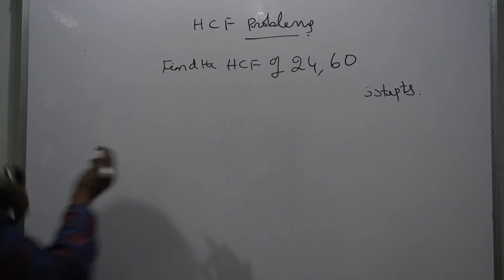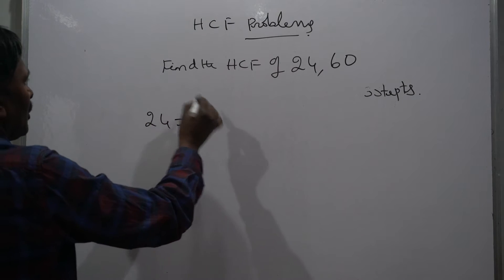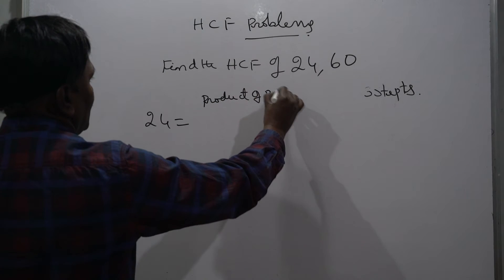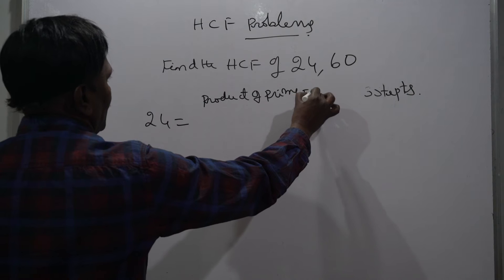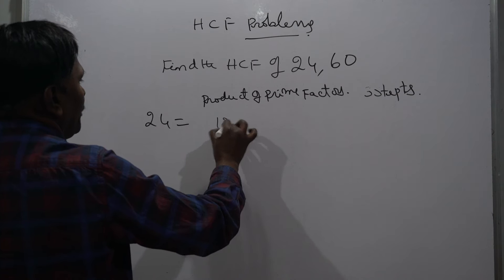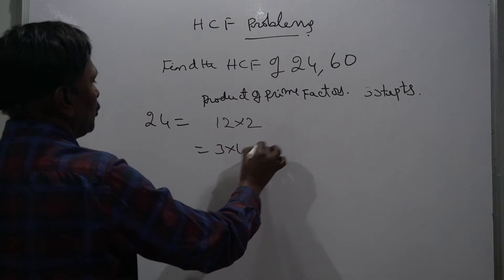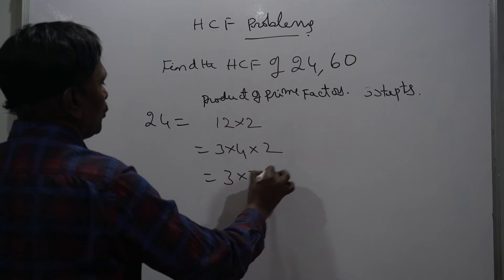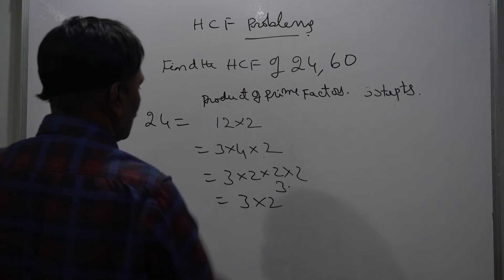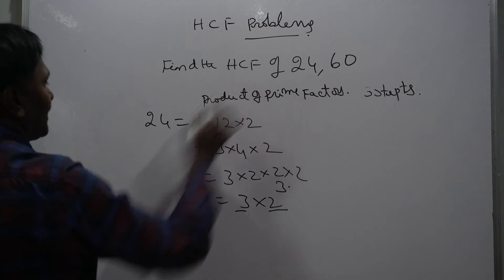Find the HCF of 24 and 60. The product of prime factors of 24: 12 into 2, which is 3 into 4 into 2, so that is 3 into 2 cubed. Here 3 is a prime number and 2 is a prime number.